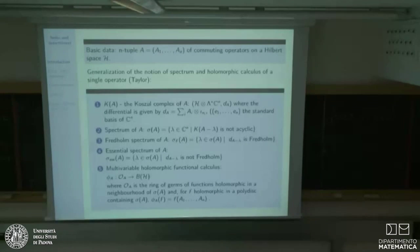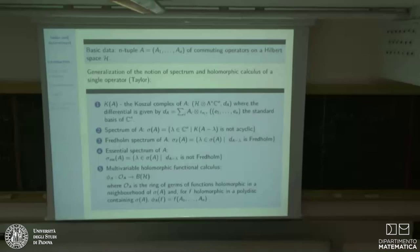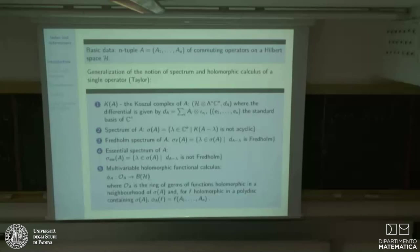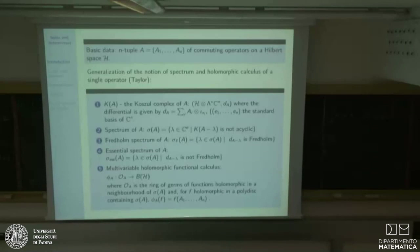The basic data we're working with: we are trying to think about generalizing notions from a single operator to an n-tuple of commuting operators. Think about a complex variety. We have an n-tuple of commuting operators on a Hilbert space. This is an old story due to Taylor — the generalization of various notions of spectrum. A single operator has a spectrum and essential spectrum. For an n-tuple, one defines the spectrum by looking at the Koszul complex of the corresponding n-tuple.